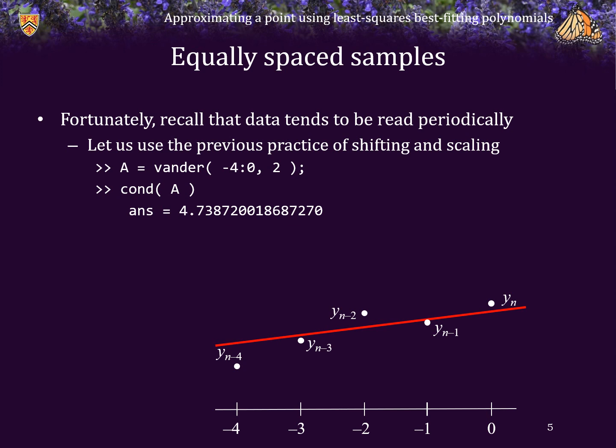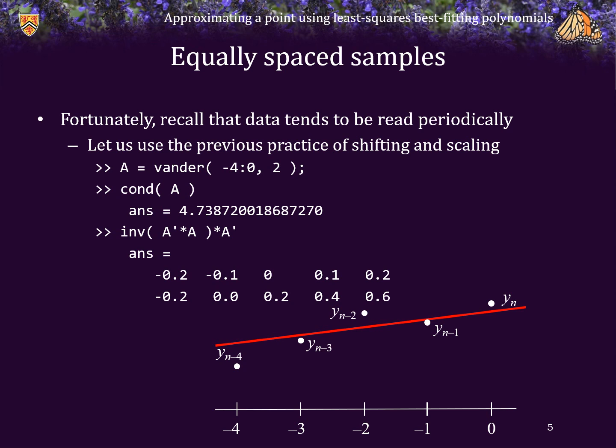If we actually calculate the inverse of A-transpose times A, all times A-transpose, we get a very simple matrix. Because the previous matrix was an entirely integer matrix, the inverse is going to be a matrix of rational numbers, which is actually quite nice. This matrix is quite simple, and notice also there are two zeros.